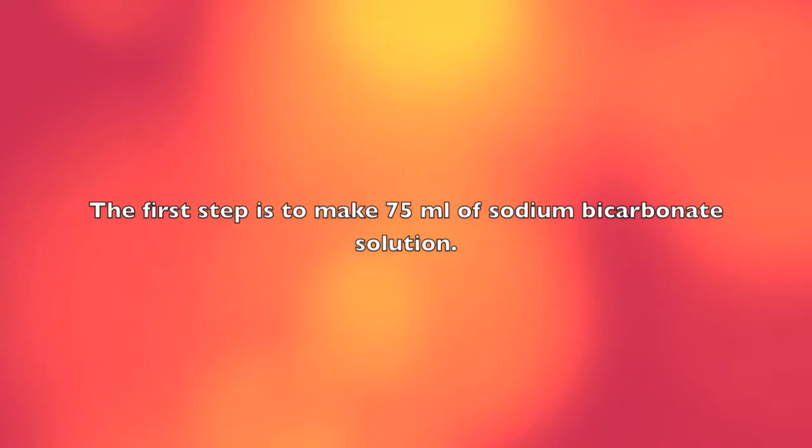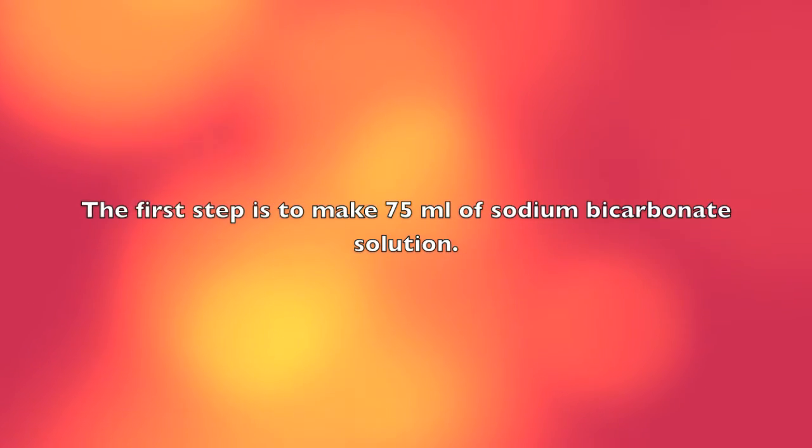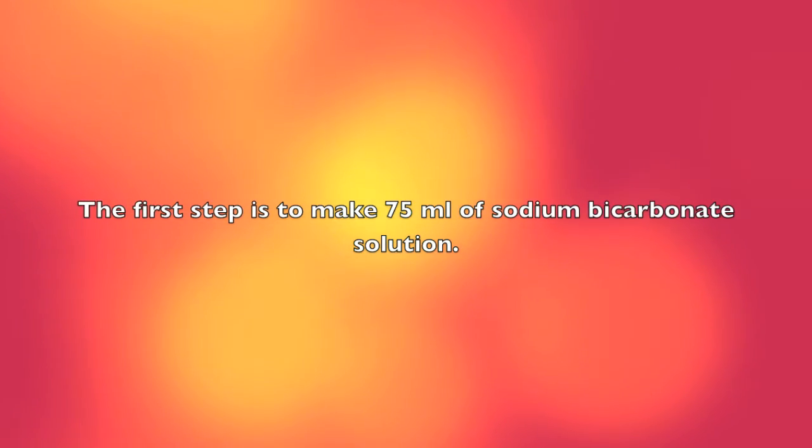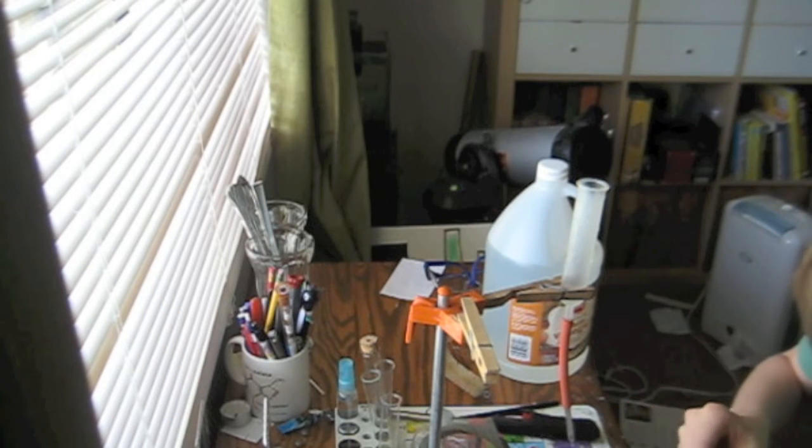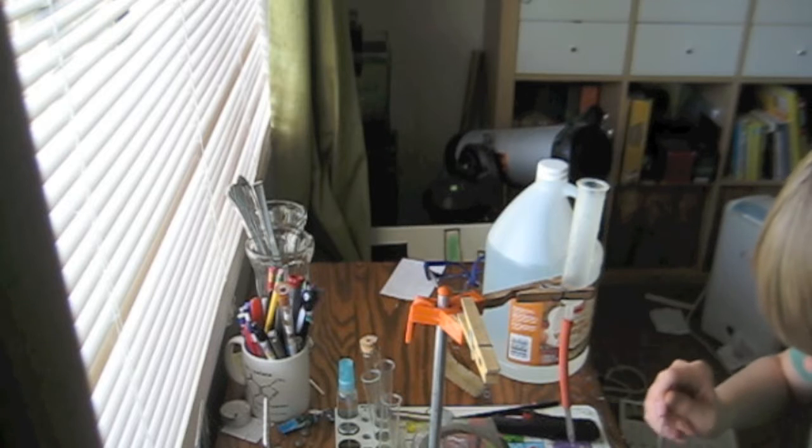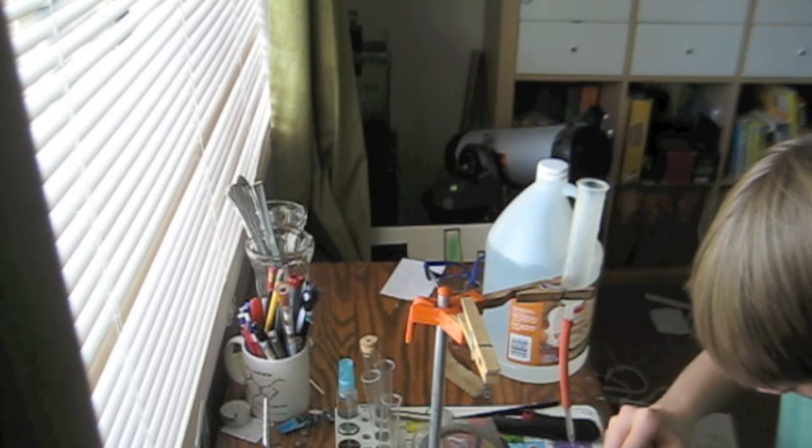The first step is to make 75 milliliters of sodium bicarbonate solution. This is what I'm going to drip into the vinegar to neutralize it and find out how strong it is. We're going to take a little bit of sodium bicarbonate and dissolve it in 75 milliliters of water and mix it well.